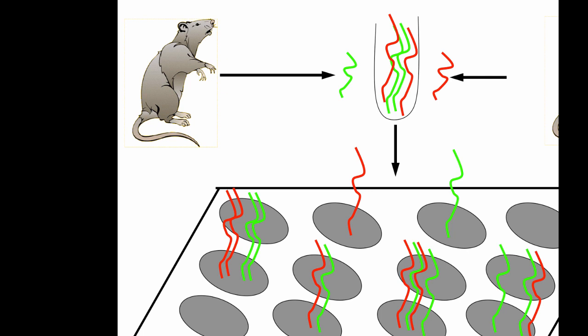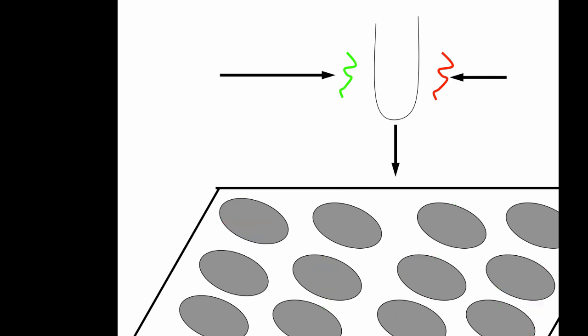Going back to the first microarrays — Pat Brown's group at Stanford — they were done with robotic printers. Grad students would look at 6,000–7,000 spot arrays and compare yeast condition 1 to yeast condition 2, going spot by spot. We obviously don't do it that way anymore, but it's not conceptually all that different — we're just trying to automate it computationally.